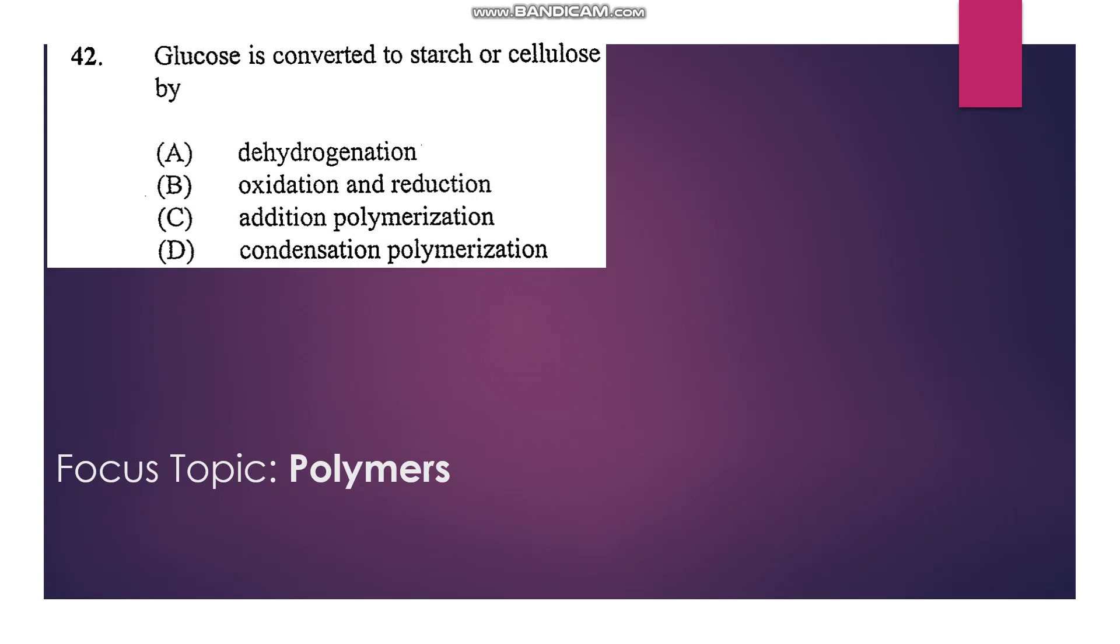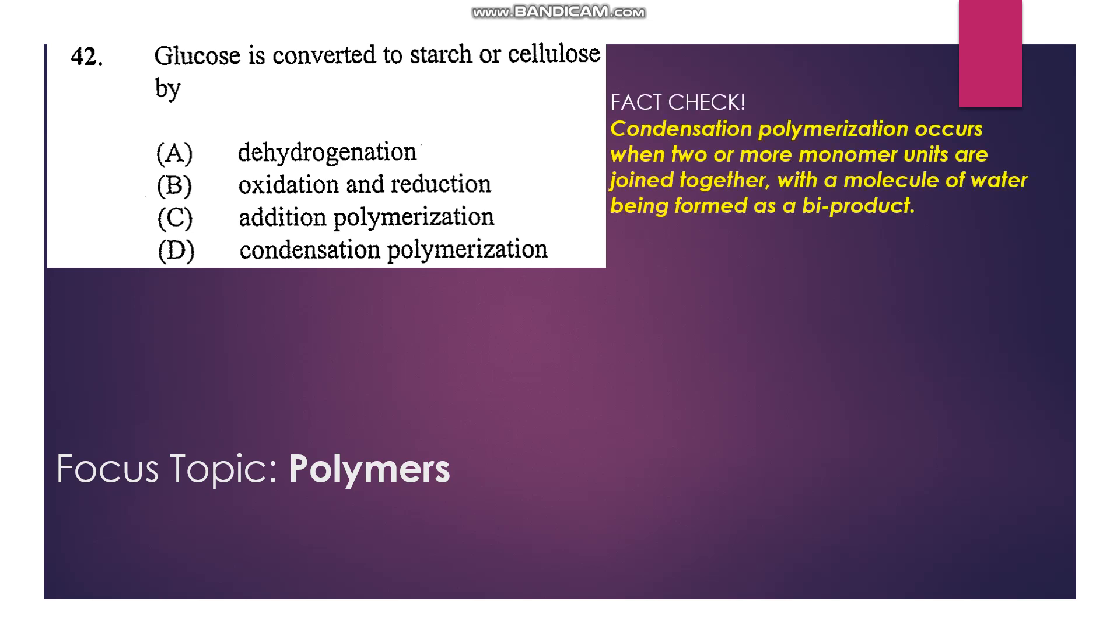42: Glucose is converted to starch or cellulose by—when glucose reacts with itself, or when molecules of glucose react with each other, we get a condensation reaction. So that is a condensation polymerization. That's D.